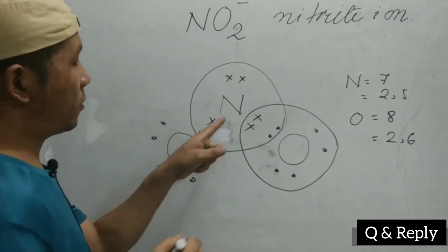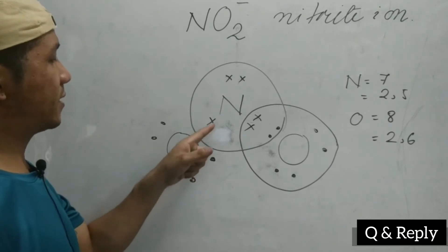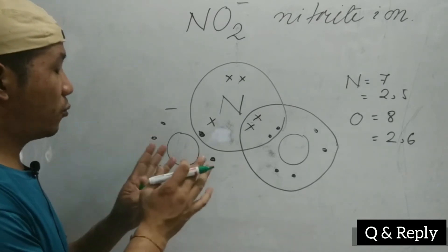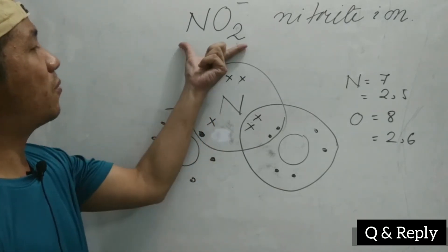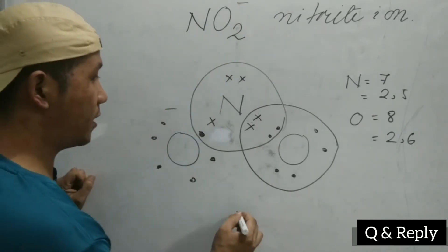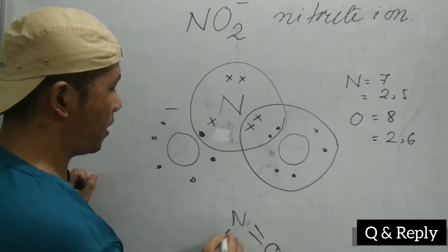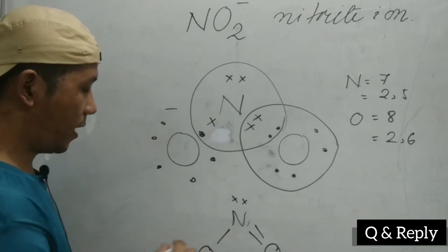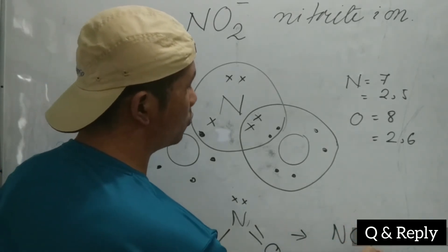This nitrogen already got a stable configuration, but what happened with this other oxygen? One, two, three, four, five, six, seven — it still needs one electron. This is how they share electrons, and how this oxygen gets minus. That is the task of the nitrite ion, which is taken as one negative — minus one. So here nitrogen shares electrons with oxygen, with one bonding and two lone pairs, and this oxygen carries negative charge.